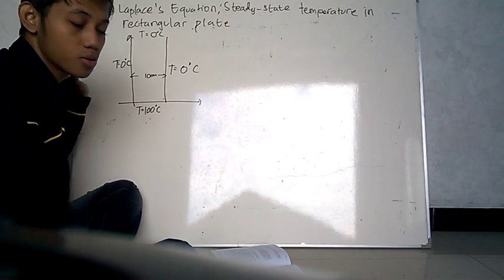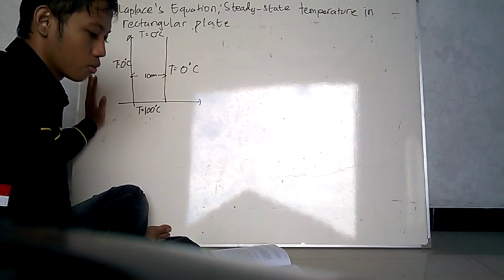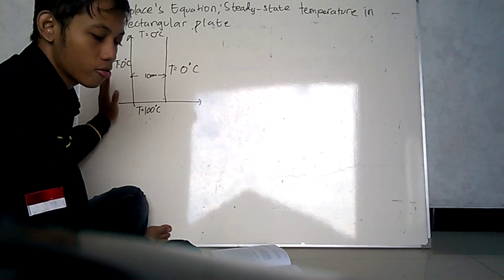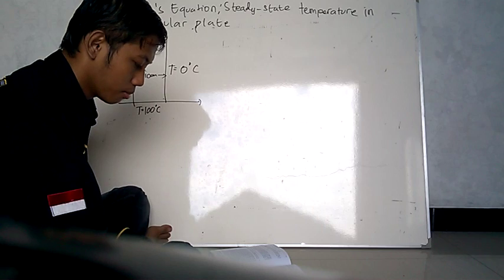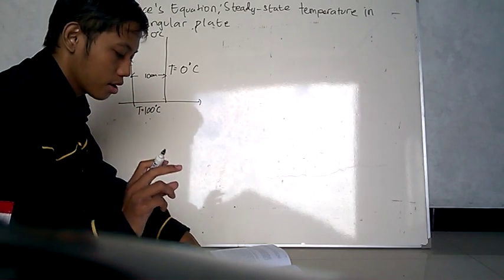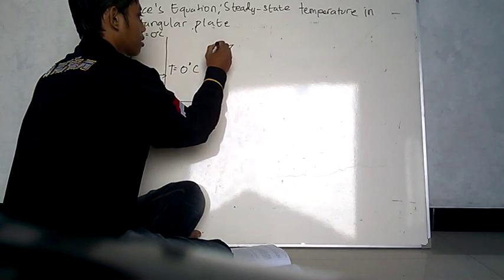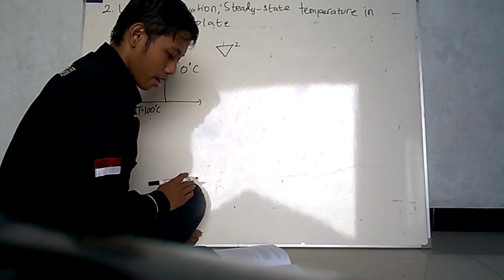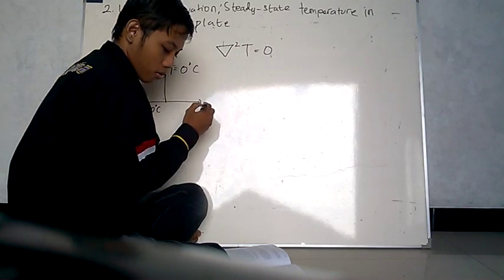Now, in this moment, in this problem, we can solve this problem with the use of separation of variables. Then in this problem, the equation 2.1, we know about this. So here, T, del T is equal to zero.